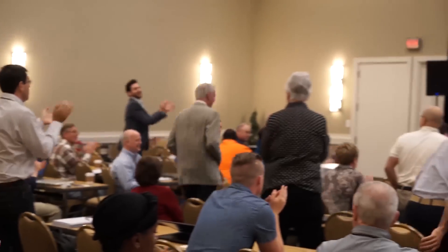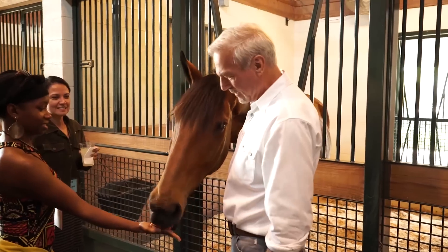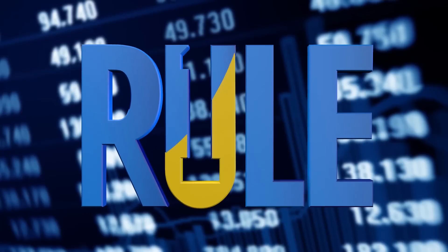Hi guys, I'm Phil Towne from Rule 1 Investing and today I want to talk to you about the famous Rule of 72. It's a really handy little shortcut. I use it constantly because it can tell me how long it takes me to double my money given a fixed interest rate.